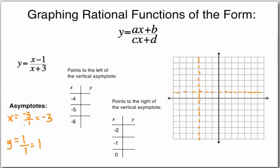Now we're going to figure out what some of these points are. I always pick 3 points to the left of the vertical asymptote and a couple to the right. Starting at negative 3, I picked negative 4, negative 5, and negative 6. Plugging in negative 4: negative 4 minus 1 is negative 5, and negative 4 plus 3 is negative 1, so negative 5 divided by negative 1 gives us positive 5. Plugging in negative 5 gives positive 3, and plugging in negative 6 gives positive 2 and 1 third.